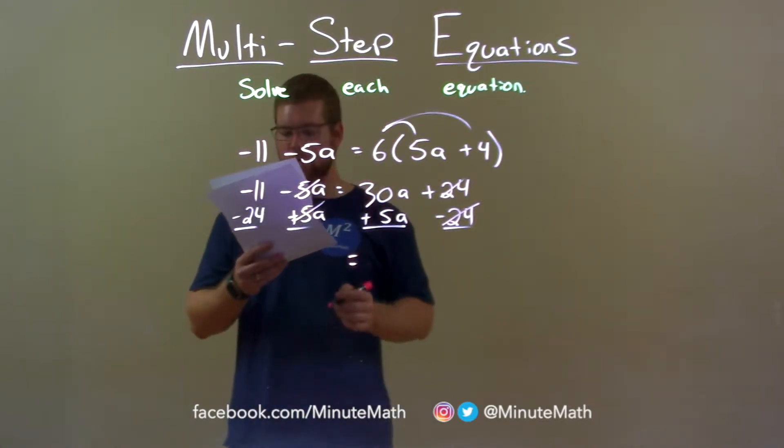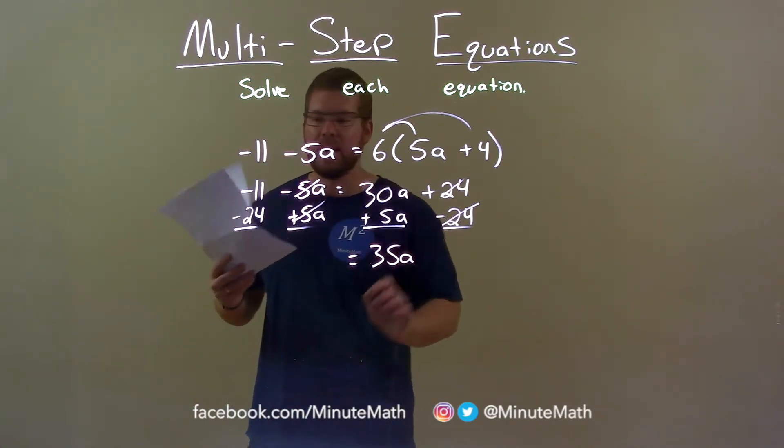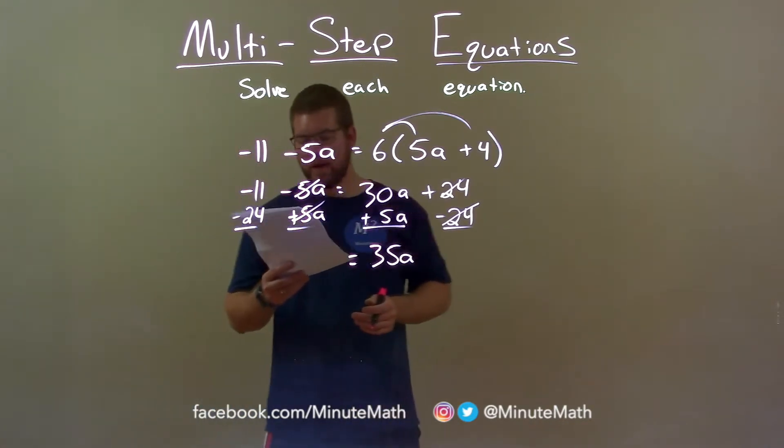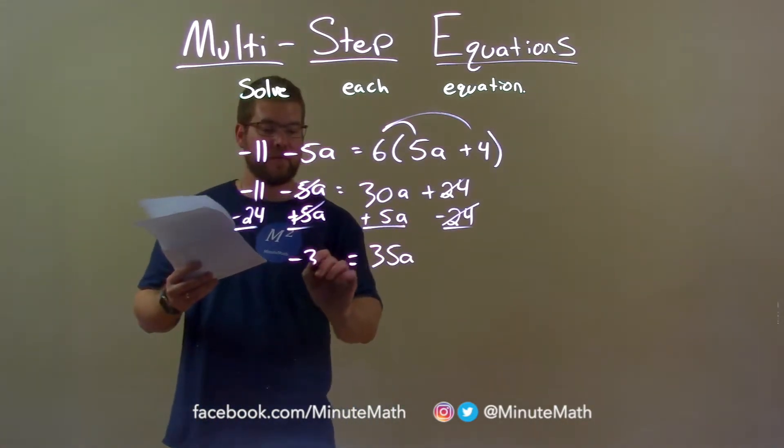On the right I'm left with 30a plus 5a is 35a. And on the left, negative 11 minus 24 is negative 35.